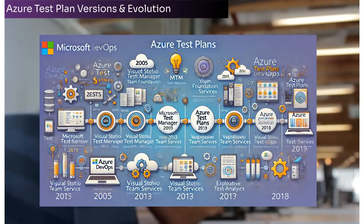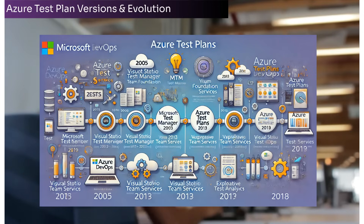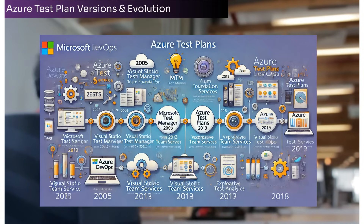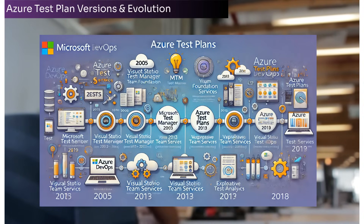Now let's look at a brief history of Azure Test Plans. The evolution of Azure Test Plans is tied to Microsoft's journey of transitioning its development tools into a cloud-first integrated DevOps platform. Early Beginnings with Team Foundation Server (TFS), between 2005 and 2018: TFS was introduced as an on-premises solution for managing the software development lifecycle, including source control, build automation and work tracking. TFS included Microsoft Test Manager (MTM) for managing manual and automated tests, which served as a precursor to Azure Test Plans.